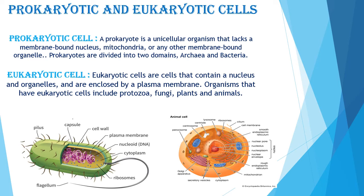Ribosomes in prokaryotes are smaller than eukaryotic ribosomes and are scattered randomly in the cytoplasm. Now, eukaryotic cells are the cells that contain a nucleus and organelles and are enclosed by a plasma membrane. Organisms that have eukaryotic cells include protozoa, fungi, plants, and animals.